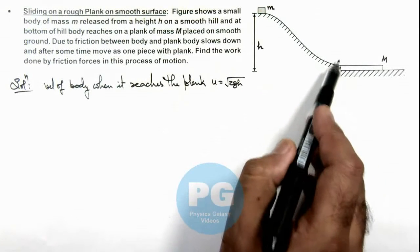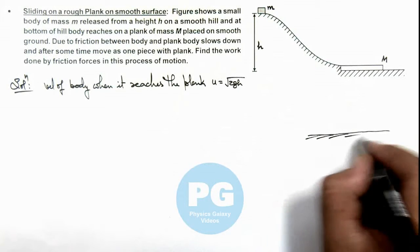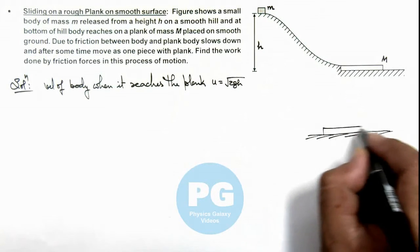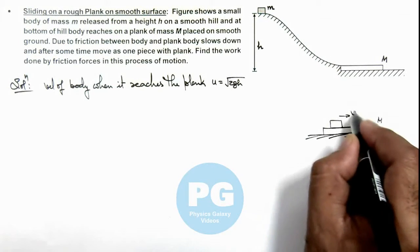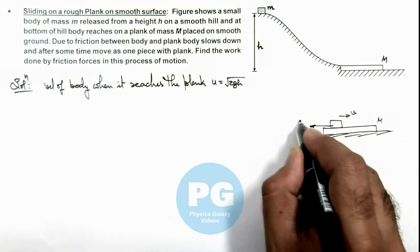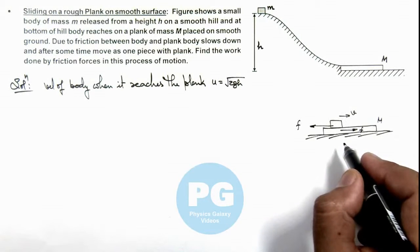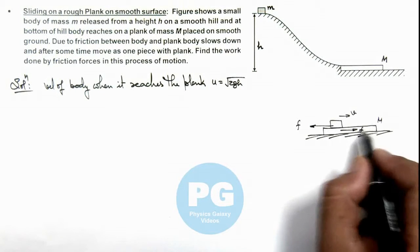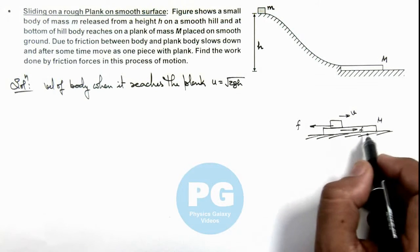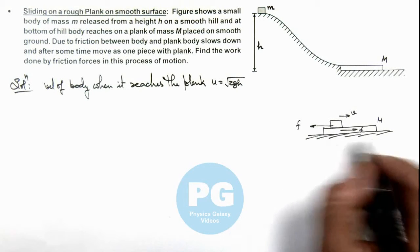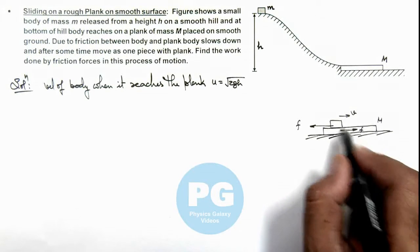Then it starts moving on plank so situation would be this. On ground, if this is the plank on which, when the body would be moving with the speed v, it experiences a friction in backward direction and the same friction acts on plank in forward direction. So this friction accelerates plank and retards the body and after some time, for a long plank, after some time body will come to rest on plank.